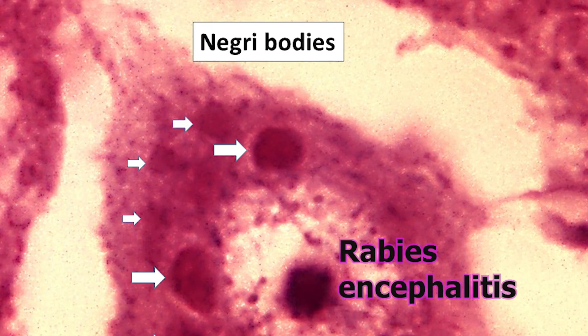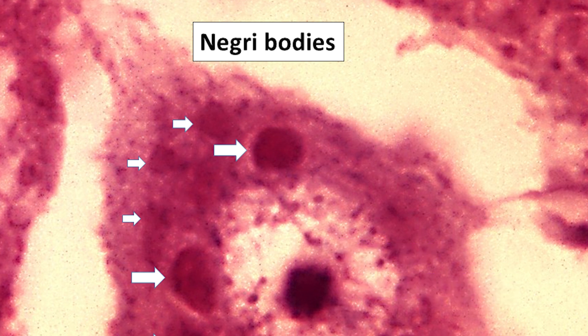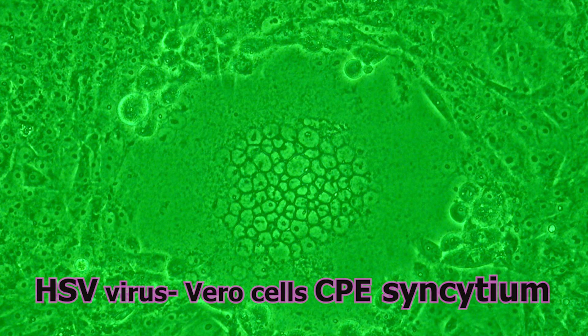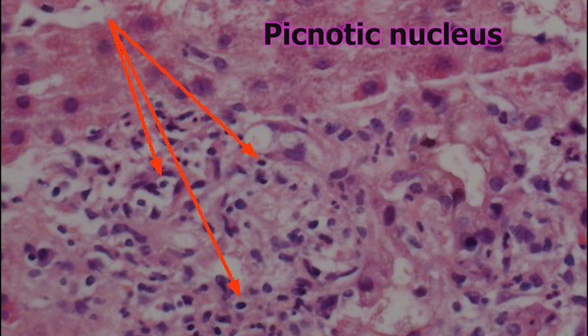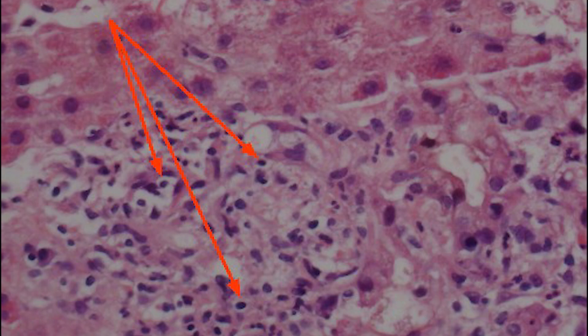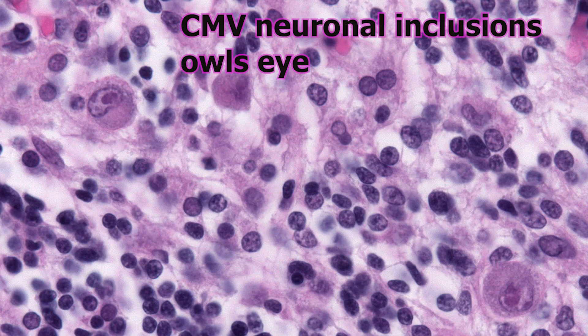Cytopathic effect. Cytopathic effect, or cytopathogenic effect, is the structural changes in host cells caused by virus invasion. Rounding of the infected cells, fusion with adjacent cells to form syncytia, and the appearance of nuclear or cytoplasmic inclusions are present. The common types of cytopathic effect are total destruction, subtotal destruction, focal degeneration, and swelling or clumping of cells. The types of virus can be identified by their cytopathic effect on host cells in cell culture.